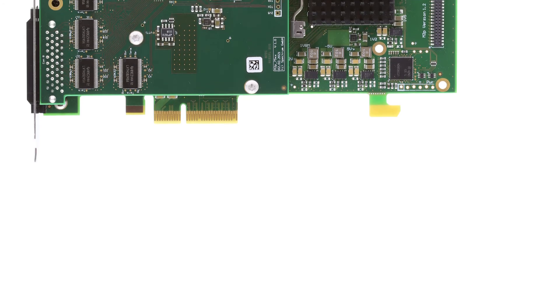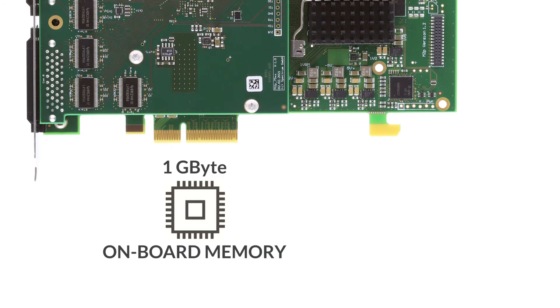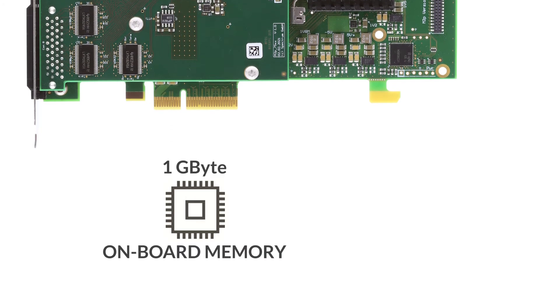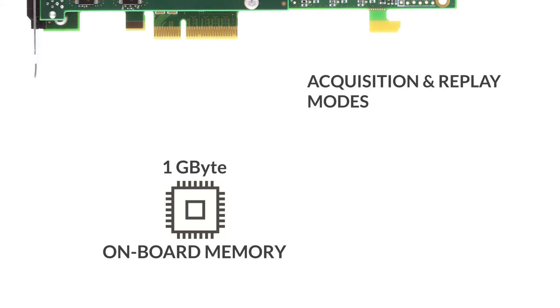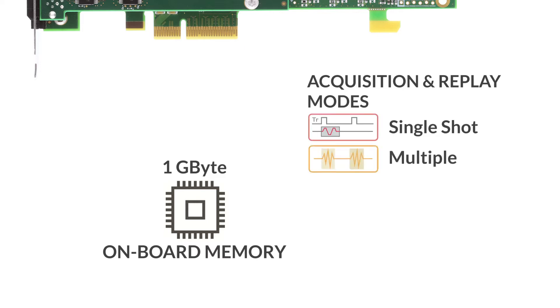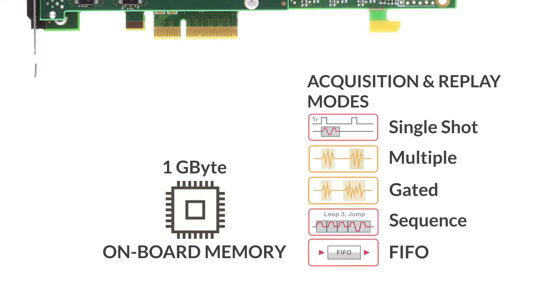Designed for maximum versatility, the card comes with 1GB of onboard memory and a variety of different acquisition and replay modes. You can acquire or generate signals in single shot, multiple, gated, sequence, and even FIFO streaming mode.